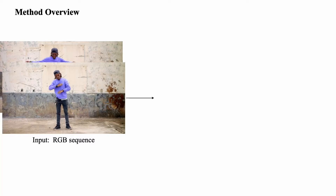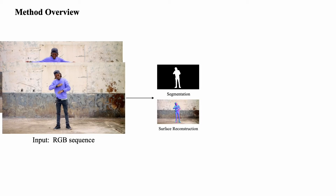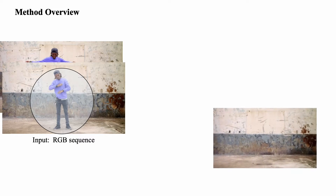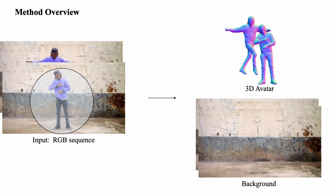Our method solves this problem by casting the problems of segmentation and surface reconstruction as a joint 3D optimization problem over the entire sequence. To disentangle the background from the dynamic scene, we model both as composited neural fields. Our method then learns the detailed 3D avatar and the background field jointly, without reliance on external segmentation tools.